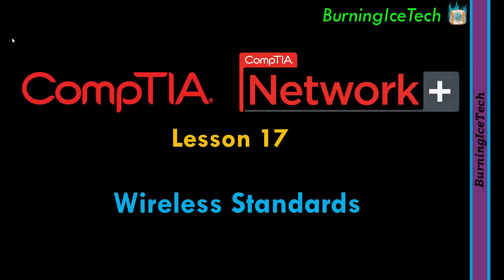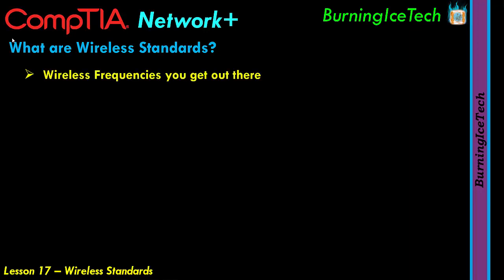Today's lesson is about wireless standards. Wireless standards are basically the various types of wireless frequencies you get out there. There are plenty of frequencies and not all of them were released at the same time, nor are they all used for the same purposes or in the same manner. One thing they all have in common is that they are all wireless, and the fact that they all normally start with 802.11.